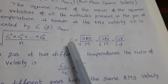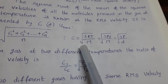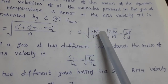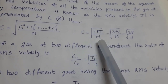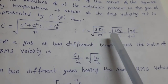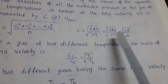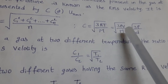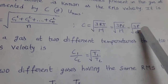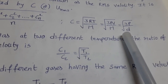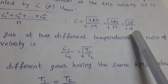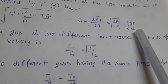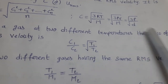Another formula for RMS velocity: C = √(3RT/M), where R is the universal gas constant, T is temperature in Kelvin, and M is the molar mass of the gas. Since volume by mass equals one by density, that equals √(3P/D), where D means density of the gas. Using these formulae we can calculate RMS velocity of the gas molecules.